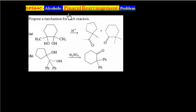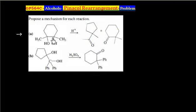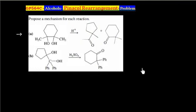This problem is related to Pinacol rearrangement. The question says to propose a mechanism for each reaction. Let us consider Part A first. We have a 6-membered ring 1,2-diol. This compound on treatment with H⁺ gives 2 ketones — one ketone contains a 6-membered ring and another ketone contains a 5-membered ring. We have to write down the mechanism for this reaction.